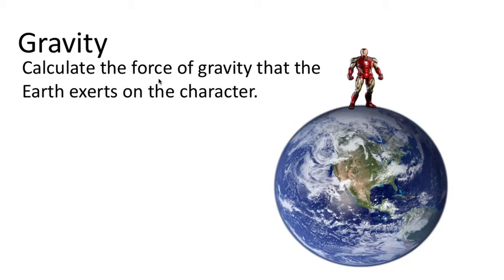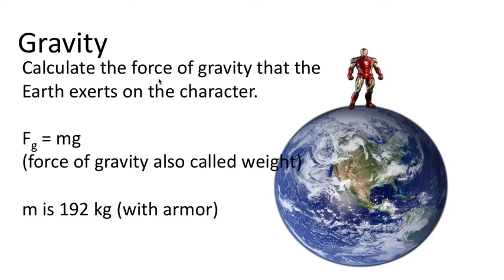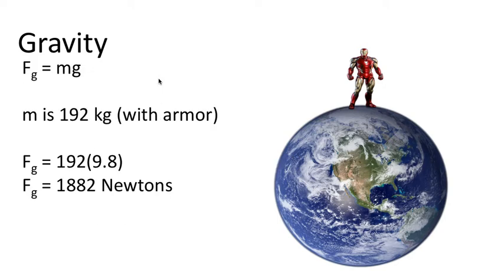Calculate the force of gravity that this character experiences on the Earth. We use our formula—force of gravity, by the way, is also called weight. There's the mass with armor included. Substituting our values into the formula, the mass is 192 kilograms, the acceleration due to gravity 9.8 meters per second squared. We end up with 1,882 newtons.